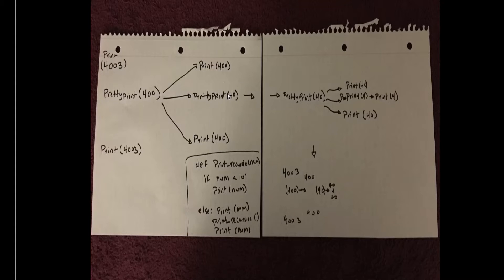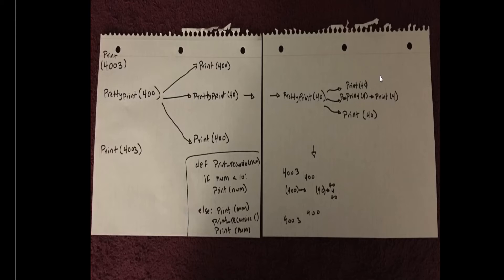This function is still not done, so we call pretty print 40. Putting 40 into the function — it doesn't satisfy the first case, so the else runs: print 40, then pretty print with 40 divided by 10 which is 4, then print 40. So the outcome of pretty print 40 is: print 40, pretty print 4, and print 40.